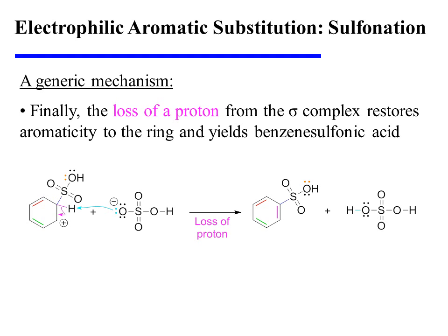Finally, the reaction concludes with the loss of a proton from the only ring carbon of the sigma complex that is sp3 hybridized. This restores aromaticity to the ring, and in this case yields benzene sulfonic acid.